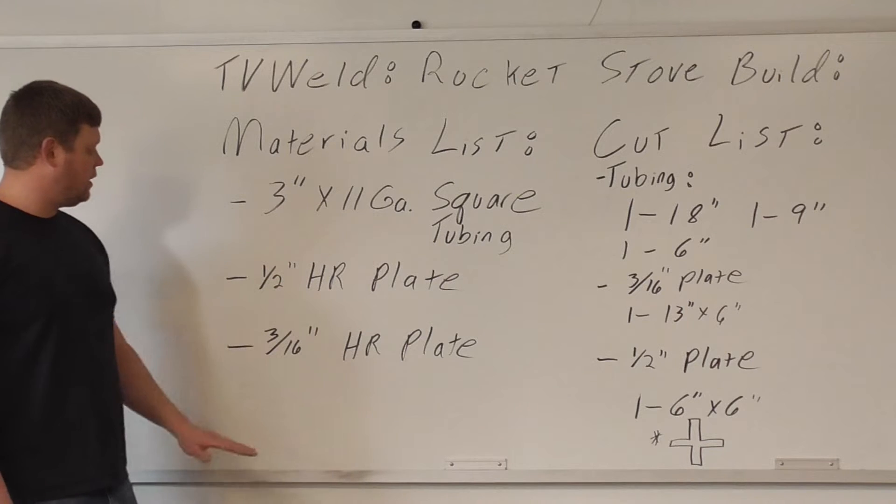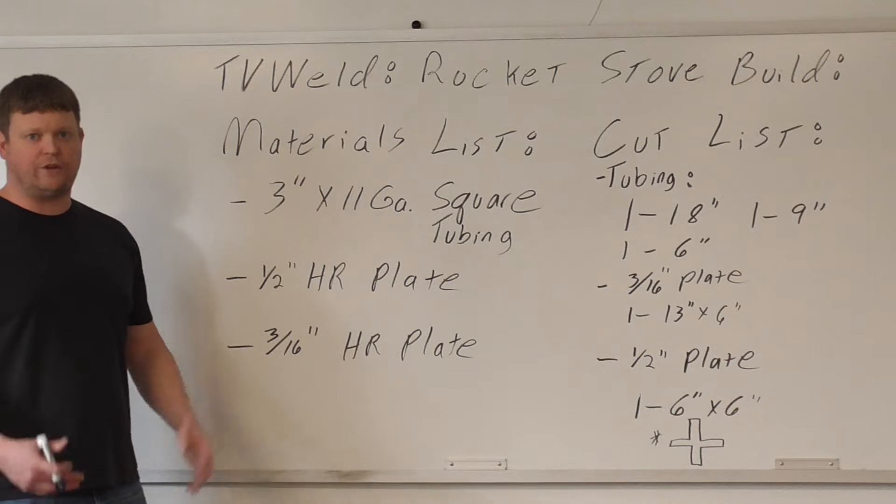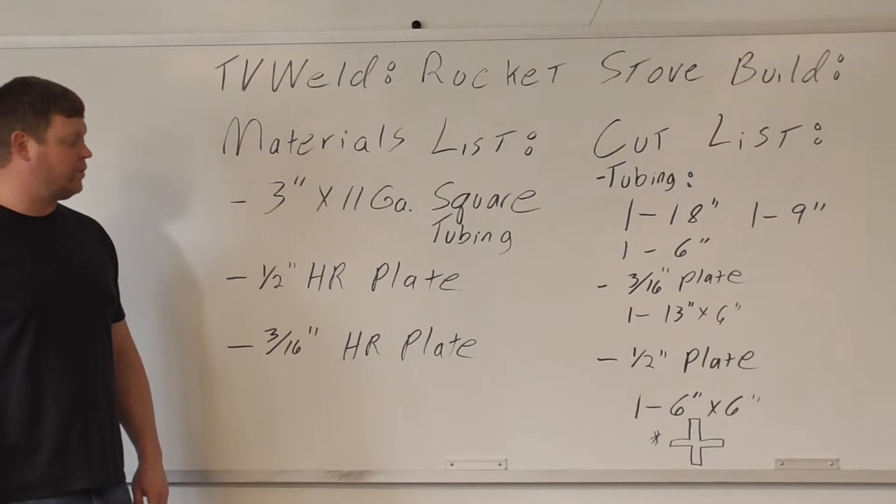A half inch hot rolled plate, 3/16ths hot rolled plate, that's just regular steel, it's actually A36. Let's get into our cut list real quick.